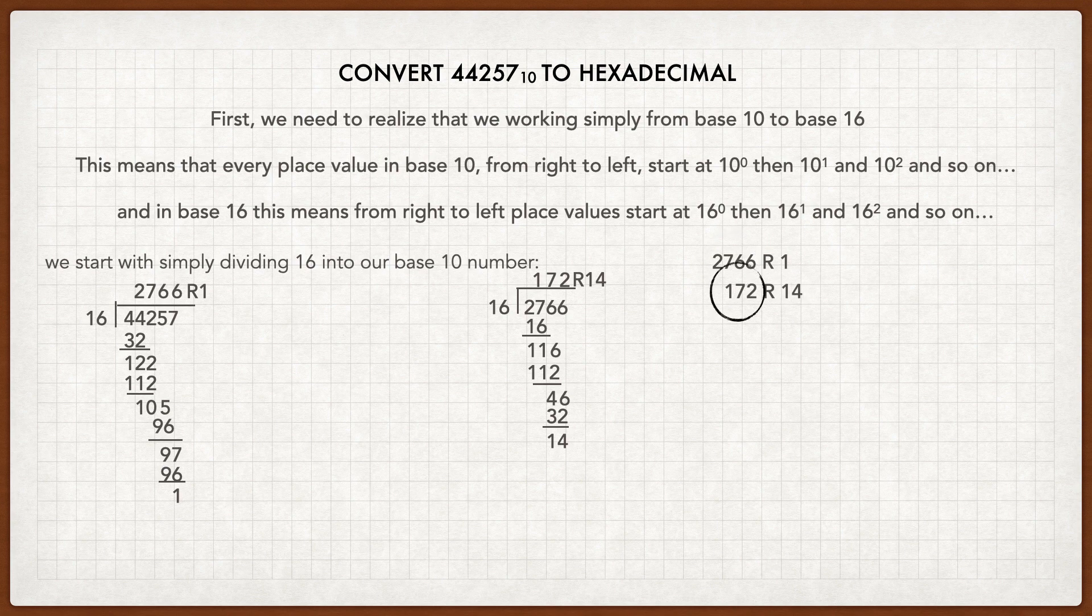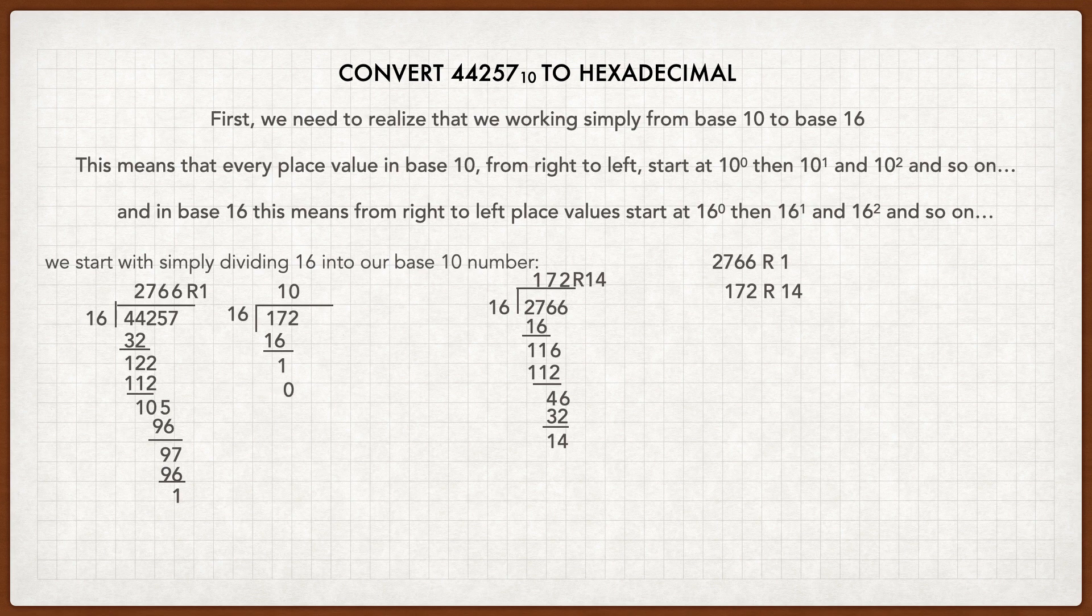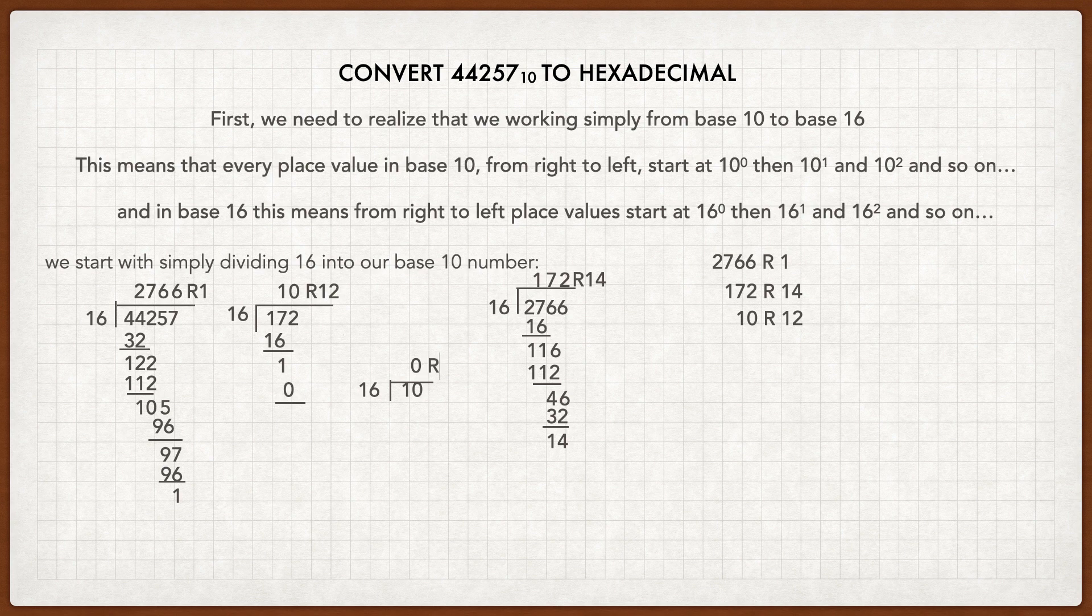And then we're going to take 172 and divide that by 16. So 17 minus 16 is 1, then you bring down the 2. So 16 goes into 12 zero times, so it's 10 remainder 12. I'm going to write that over on the side. Then we're going to work with a 10. We're trying to get down to a 0 with a remainder. And here we have it. So 16 goes into 10 zero times with a remainder of 10.